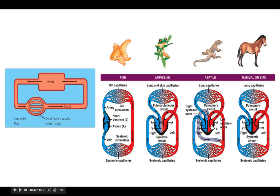Reptiles also have a four-chambered heart, but it's not as strong or efficient as ours. They also have an extra circuit — the right systemic aorta — which allows the movement of mixed oxygenated and deoxygenated blood to the capillaries. This makes it not entirely efficient, because that mixed blood also carries carbon dioxide, which is not necessary for the cells.